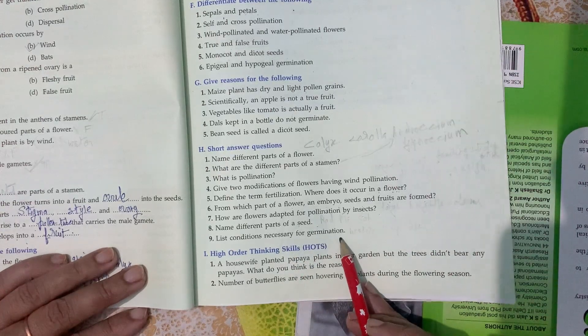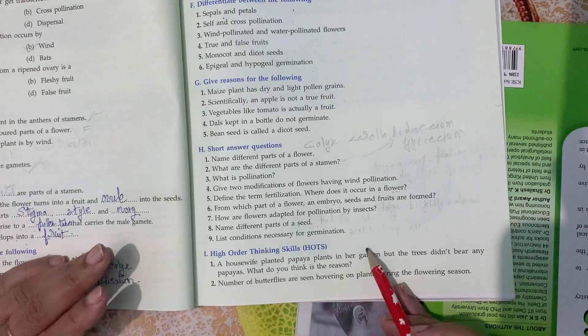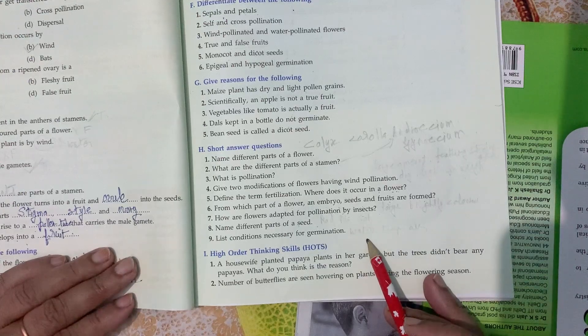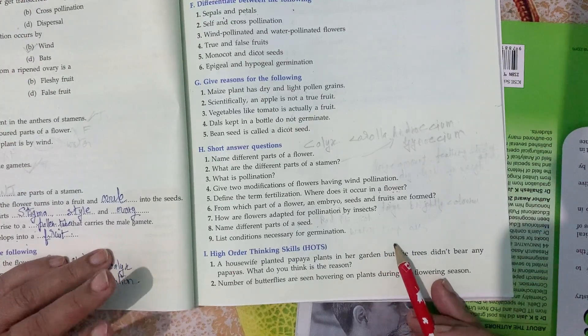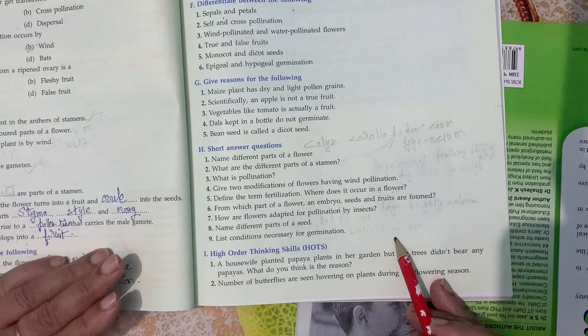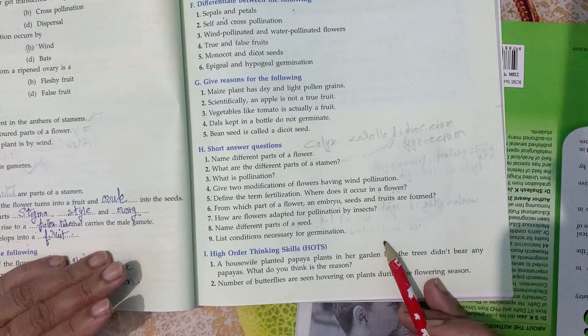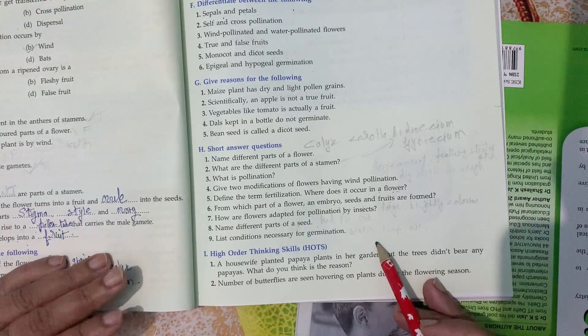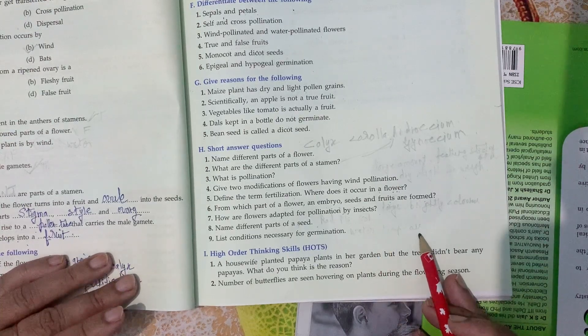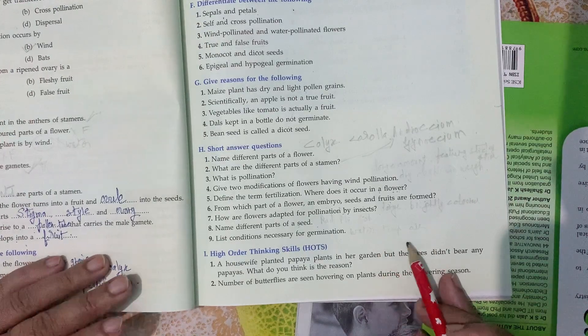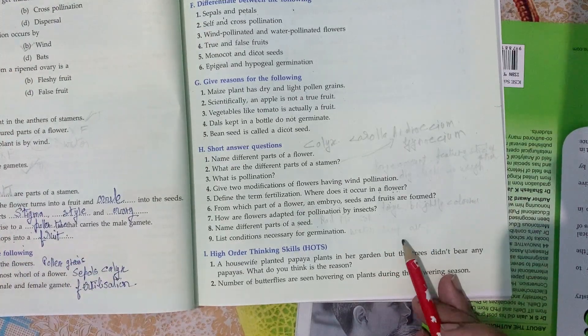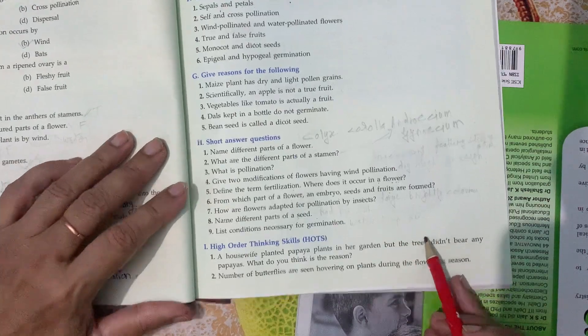Conditions necessary for germination. Three conditions are water, proper optimum temperature, and air. Oxygen for respiration, water for swelling. After absorbing water, the seed swells, starts respiring, and then grows further. It should also have proper temperature for germination.